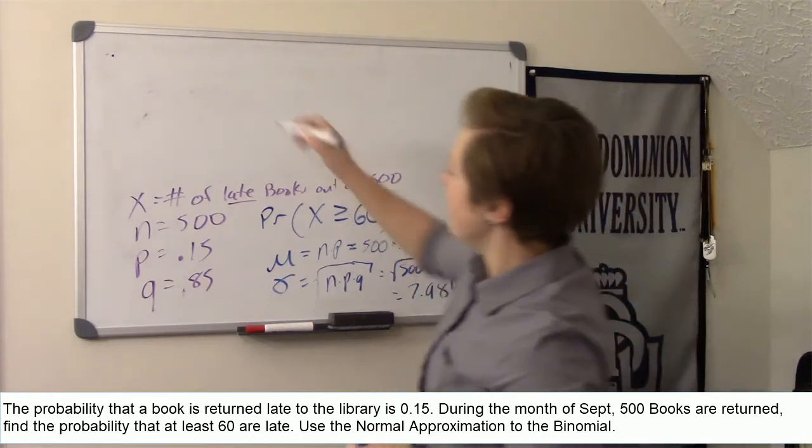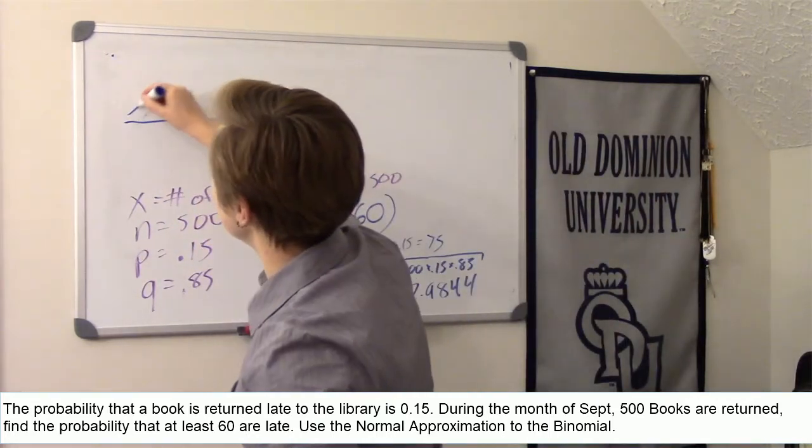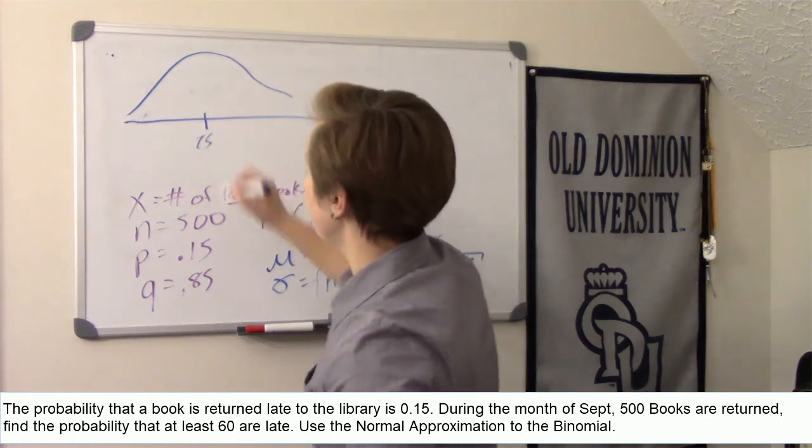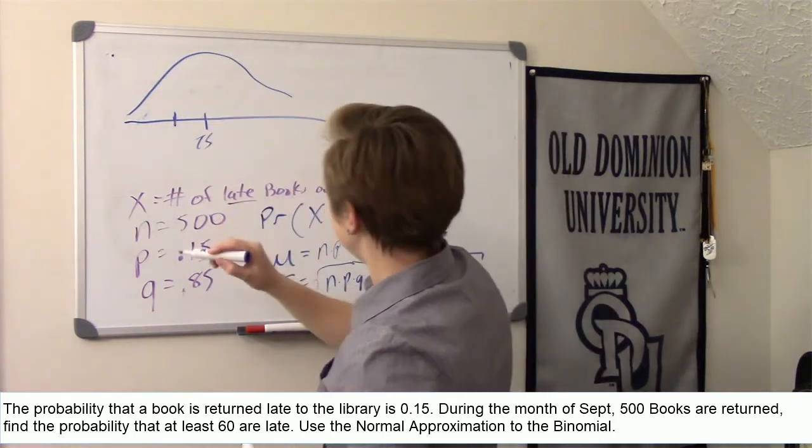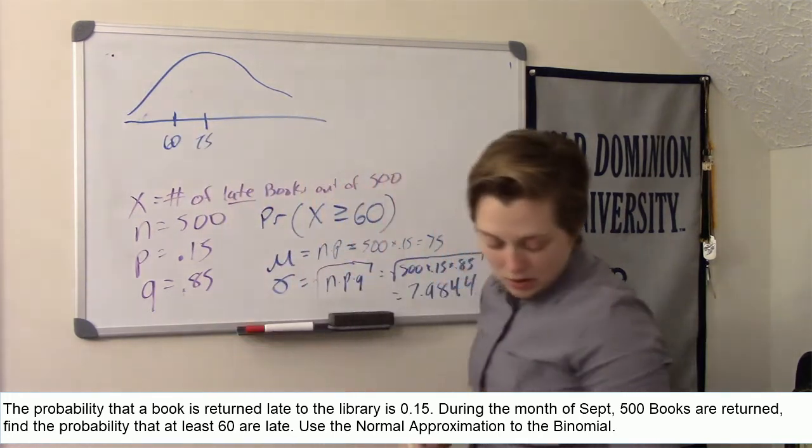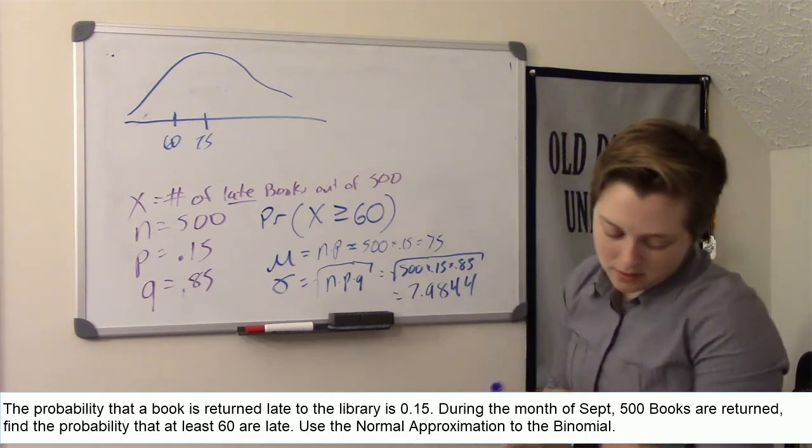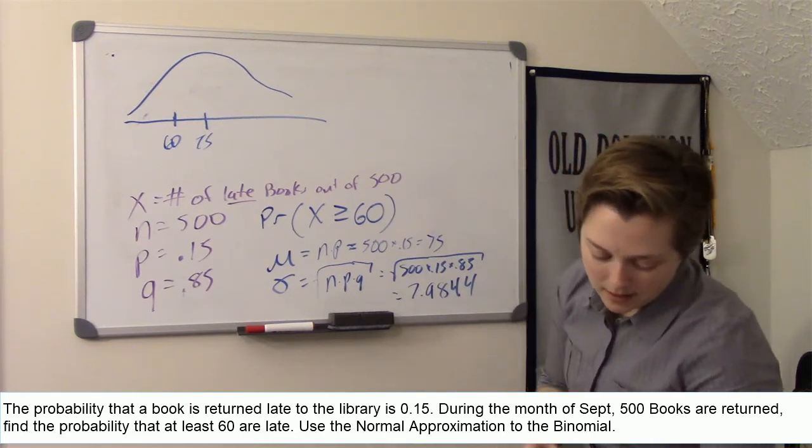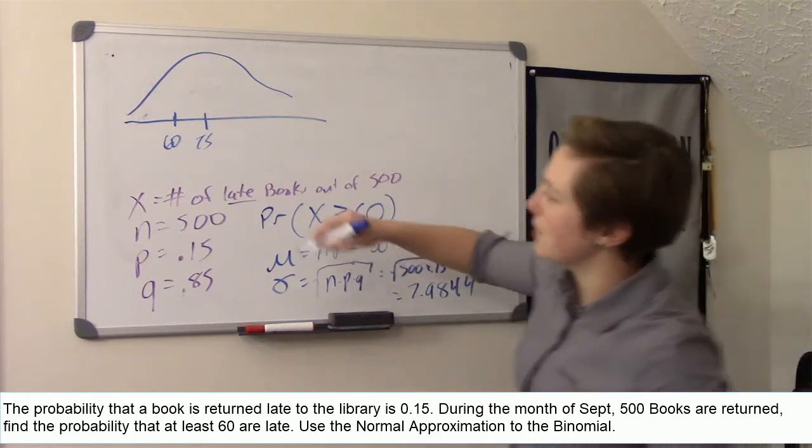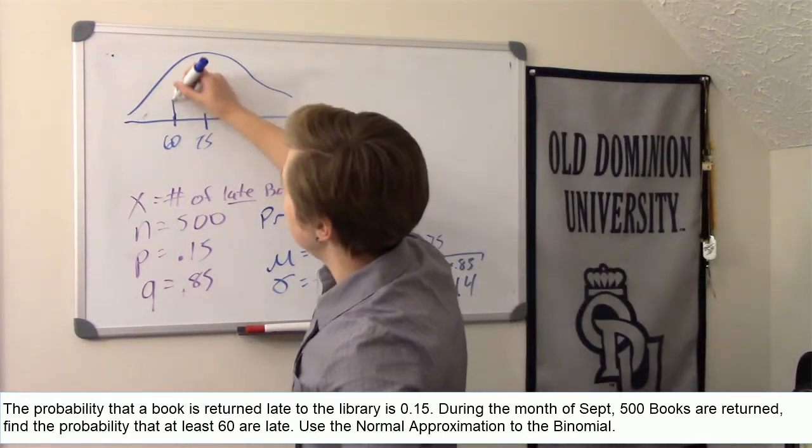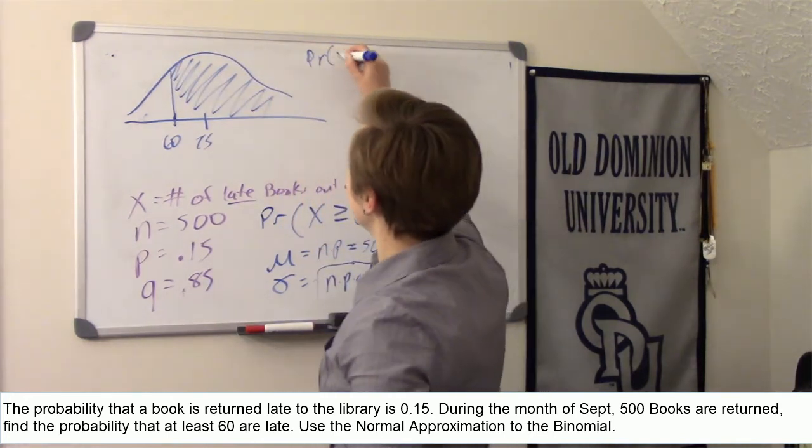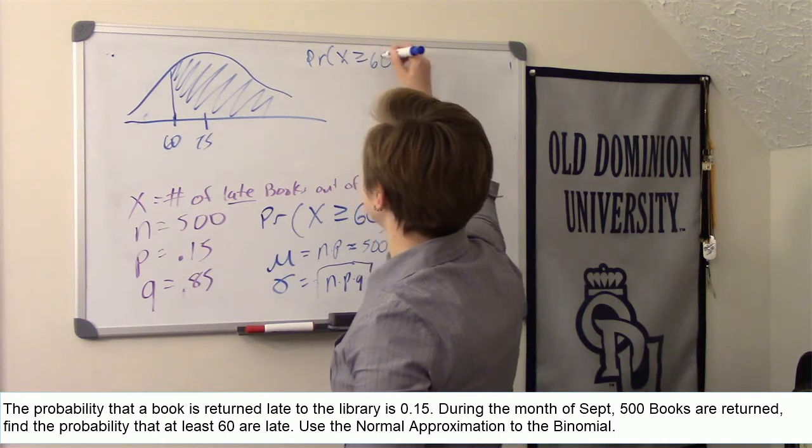So we're trying to find, let me draw a normal distribution. In the center is our mean, which is 75. We're trying to find the probability x is greater than or equal to 60. So at least 60, we're trying to find the probability that x is greater than or equal to 60.